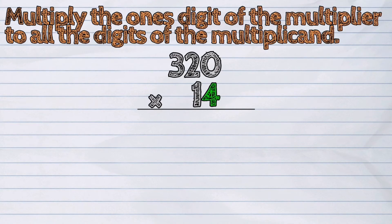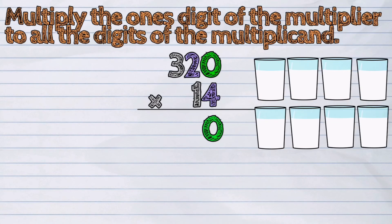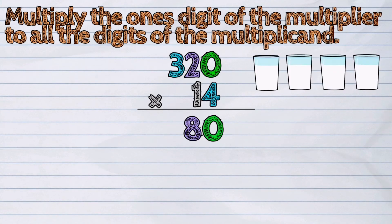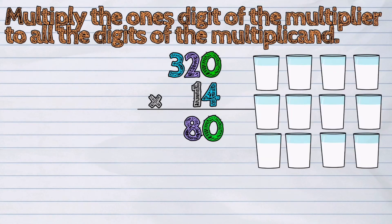Then, multiply the ones digit of the multiplier to all the digits of the multiplicand. 4 times 0 is 0. 4 times 2 is 8. 4 times 3 is 12.